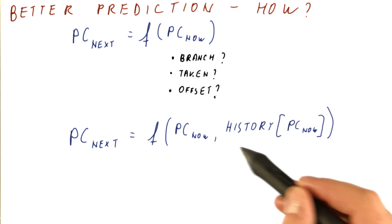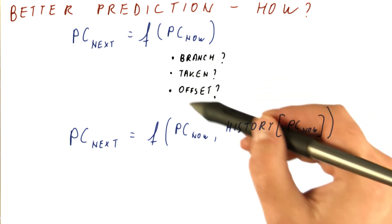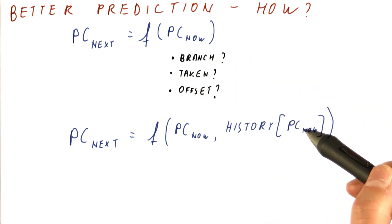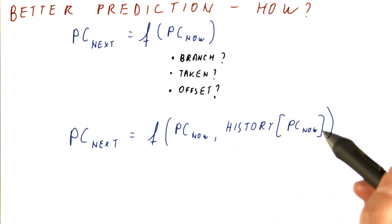So really, that is what we can use. We don't know for sure what this branch is going to do, but we can know what it did the few previous times when it was executed.